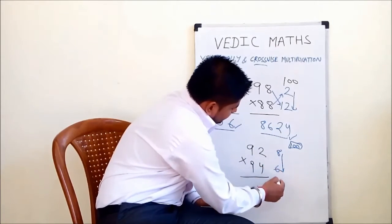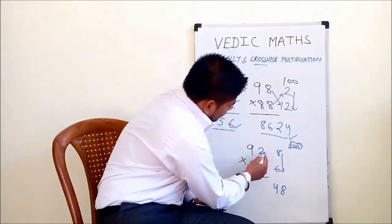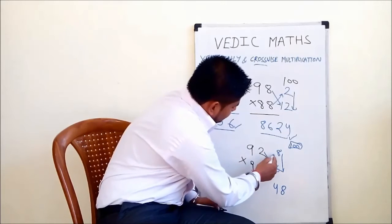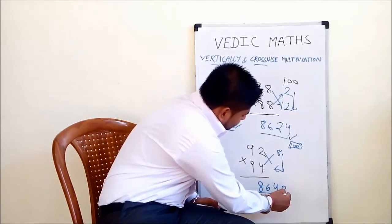So 8 into 6 is 48. Either we subtract 92 minus 6 or 94 minus 8, which is 86. So 8648 is the answer.